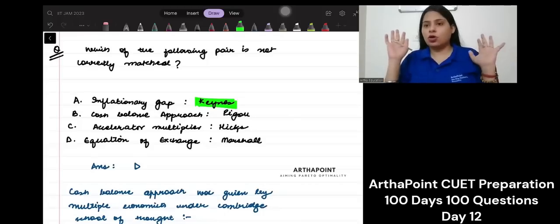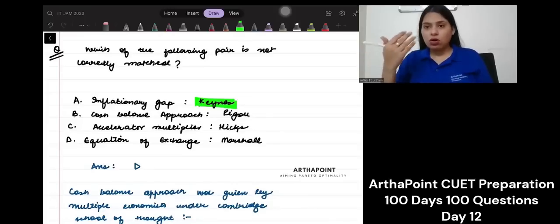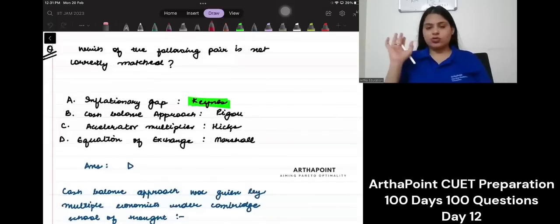Classical economists always think there is a full employment level. But it was Keynes who said that, no, this is not true. You may have excess demand or excess supply. He is the one who talked about inflationary and deflationary gap. So, this is the correct option.